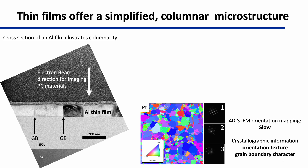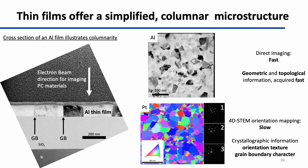The problem is that this technique is slow, taking tens of minutes to acquire each map. Instead, to collect rapid, dynamic information, we need to turn to bright field imaging. This mode is fast and allows us to take videos at high time resolution.